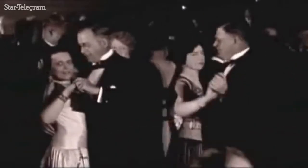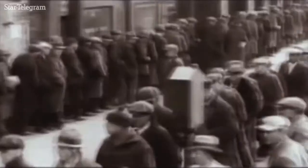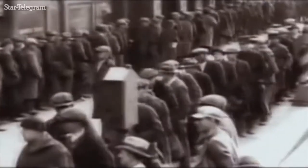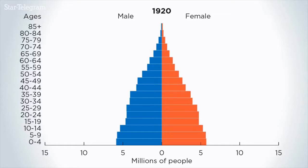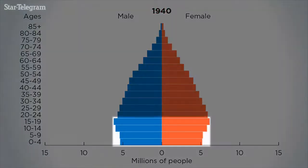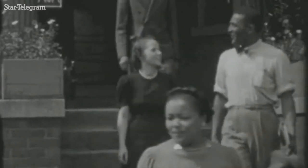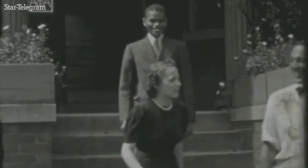In 1930, that started to change. Fertility rates fell after the start of the Great Depression, and by 1940, we see a narrow base on the pyramid — a squeeze on the population that will carry forward through the decades.